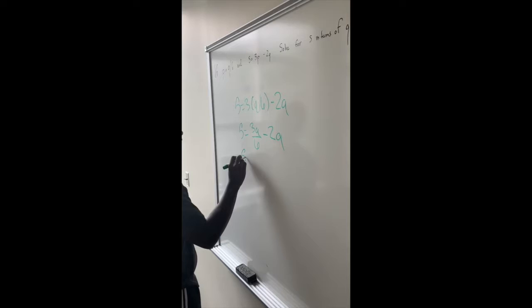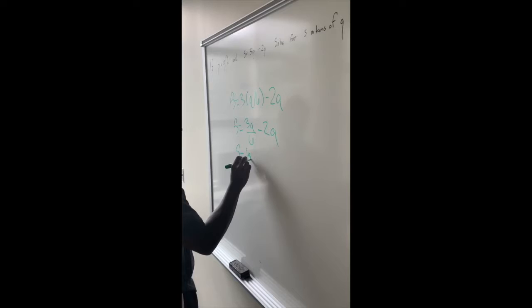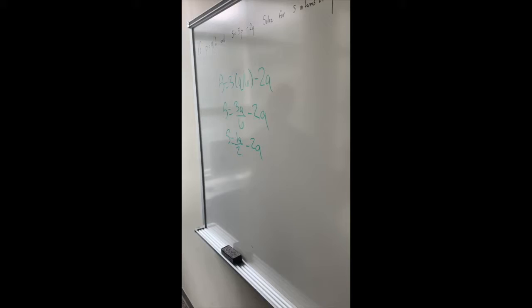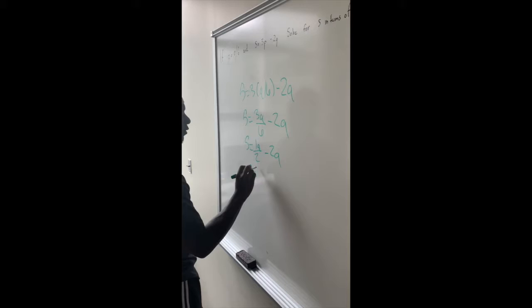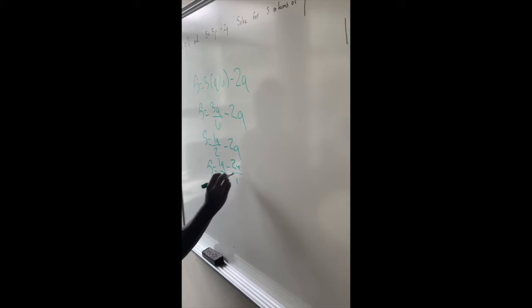We know 3 divided by 6 is one-half, so one-half Q, minus 2Q. To make it easier for ourselves, we are going to turn this 2Q into a fraction, so it would be S equals 1Q divided by 2 minus 2 over 1Q.